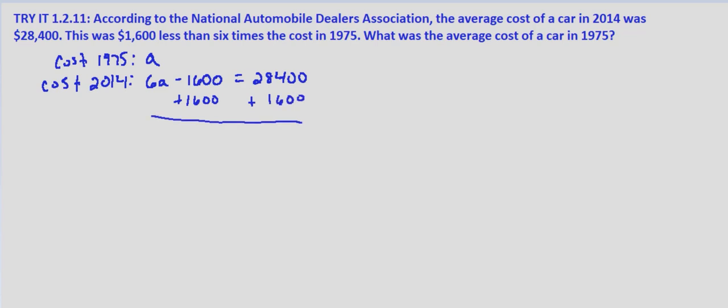That leaves us with 6A on the left side. And then $28,400 plus $1,600 is $30,000. Divide both sides by six and we get A equals $5,000.